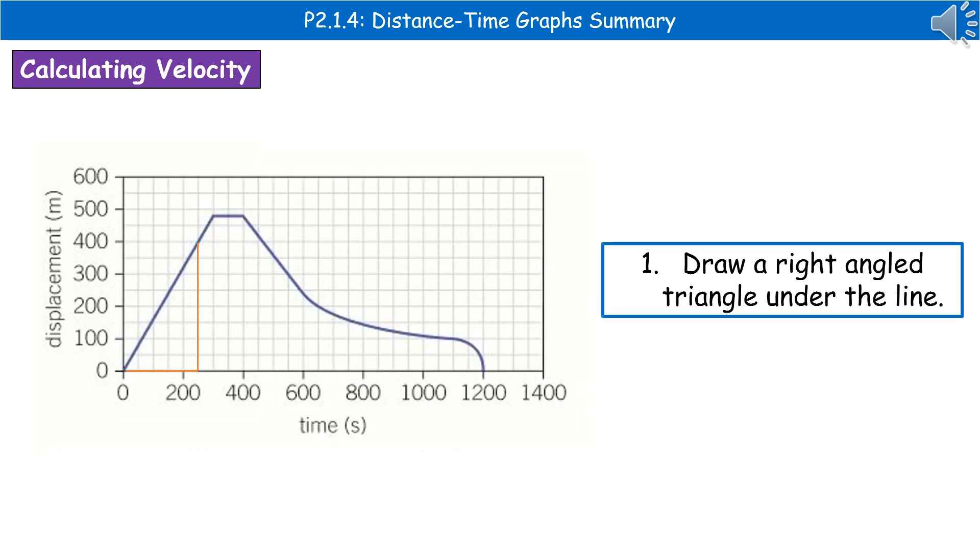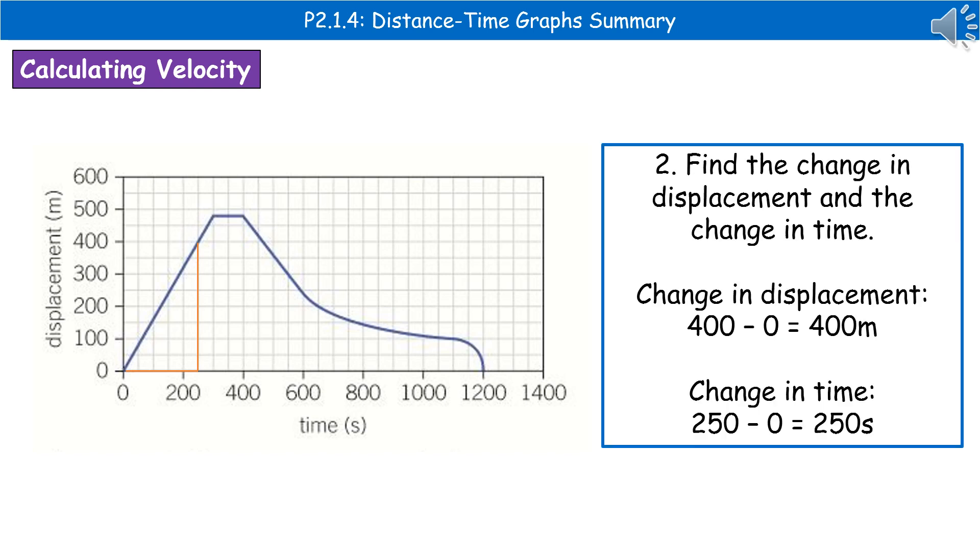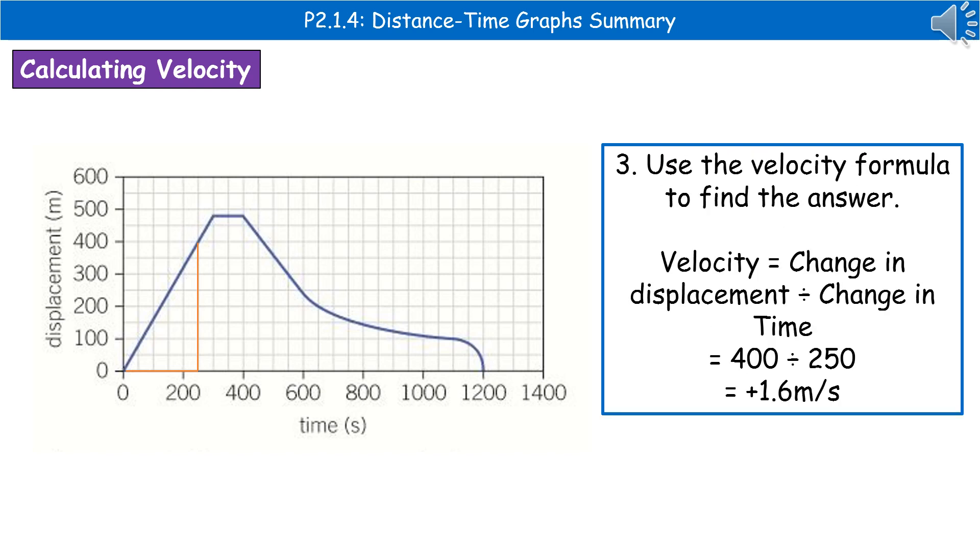If we were to be asked to calculate the velocity from a displacement time graph, we'd go through the same steps that we did before. First, you draw a right angle triangle under the line of the area we're concerned with. Next, we work out the change in displacement and the change in time, just by subtracting your starting point from the end point for each. And then finally, we use our velocity formula to find the answer. Velocity is the change in displacement divided by the change in time. So 400 divided by 250 in our example gives us 1.6 metres per second.